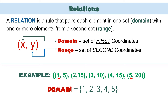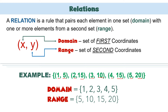While for the range, it is the set of second coordinates. So we have 5, 15, 10, 15, and 20. Since 15 repeats, we may just write 5, 10, 15, and 20. We may arrange the elements from least to greatest.